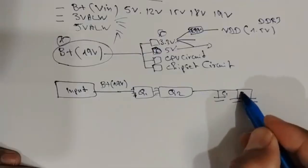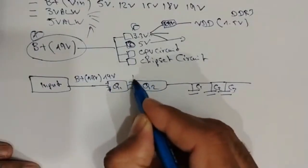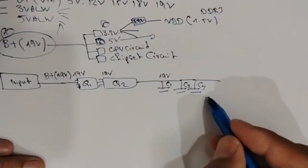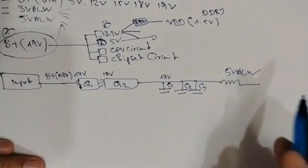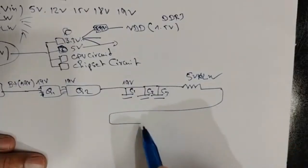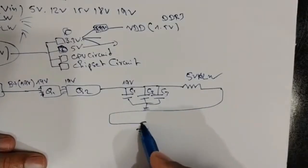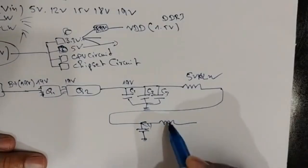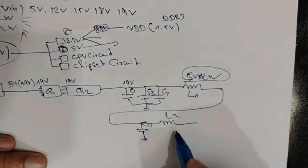After the second MOSFET, voltage is applied to three ceramic capacitors: C1, C2, C3 — here we have 19 volts, 19 volts, and 19 volts. After those capacitors we find 5 volts at the inductor. This 5 volts is then applied to another ceramic capacitor C4, which is connected to an inductor.